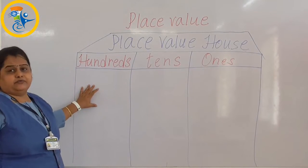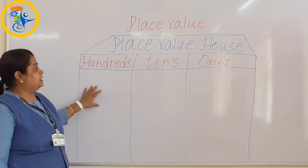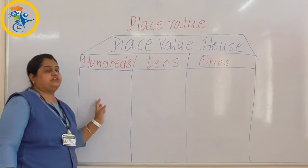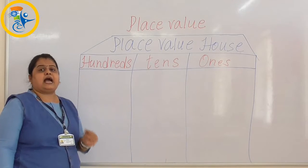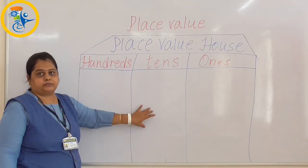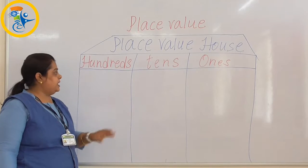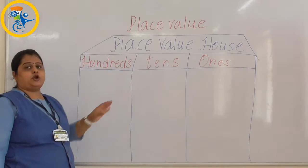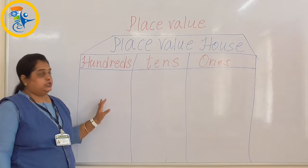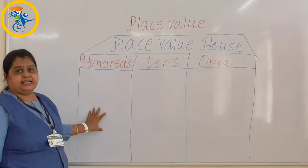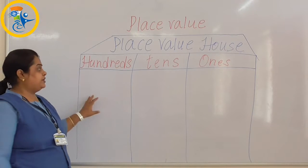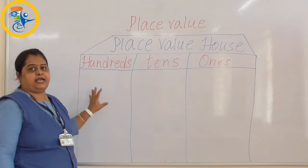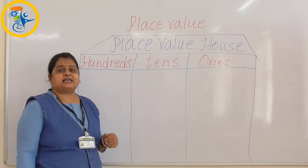Now before we start with a number, let us understand the rule of this place value house. The rule of this house is that you can have only one digit in one room. Remember, you can place any digit from 0 to 9, but you cannot place two digits in one room. You can place only one digit in one room.